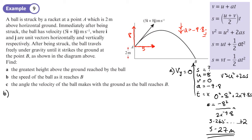Part B: find the speed of the ball when it reaches point B. We need to work out the velocity in the horizontal and vertical directions and then use Pythagoras. The horizontal velocity stays the same as the initial velocity, so the horizontal velocity is 5 m/s. We now need to work out the vertical velocity at B.